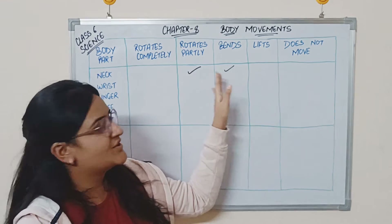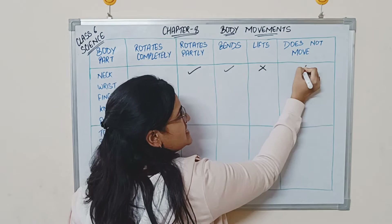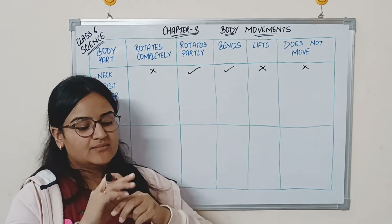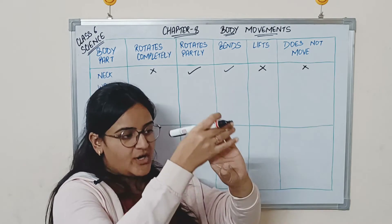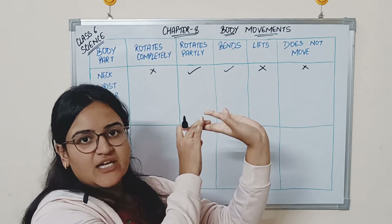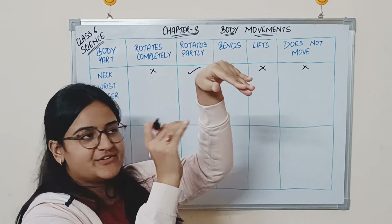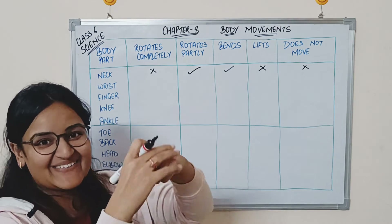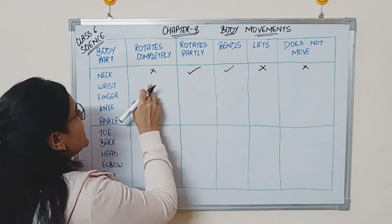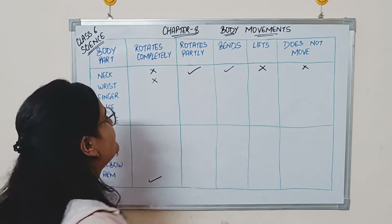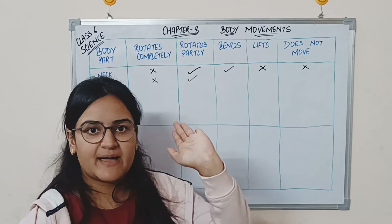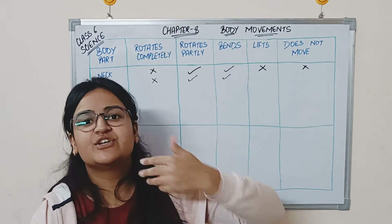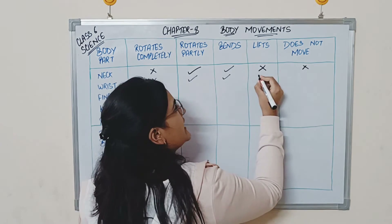Now look at your wrist — you can move it but there is a limit. You can bend it forward and backward. You can rotate it partly, but not completely — don't try to force it, you'll hurt yourself. Can you lift your wrist? Yes — whenever you raise your hand, you have lifted your wrist. So it is moving.